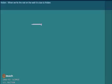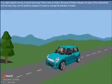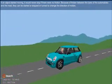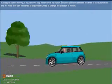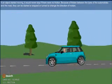Friction: When we fix the nail on the wall, it is due to friction. If an object started moving, it would never stop if there were no friction. Because of friction between the tires of the automobiles and the road, they can be started or stopped or turned to change the direction of motion.